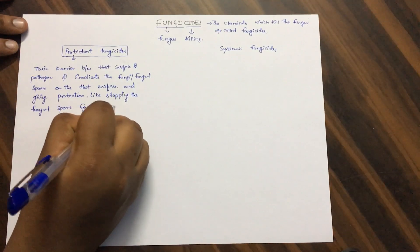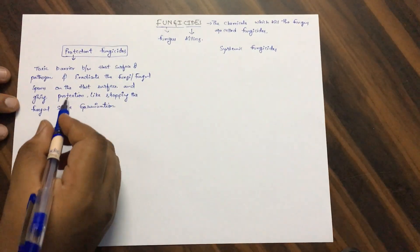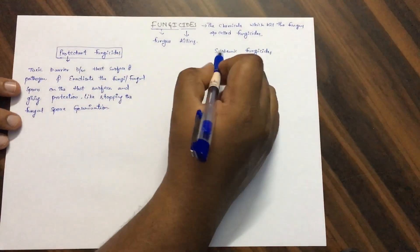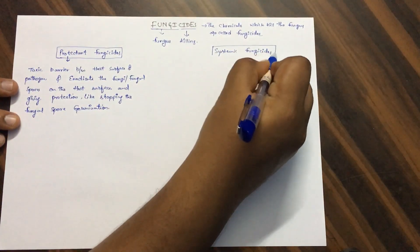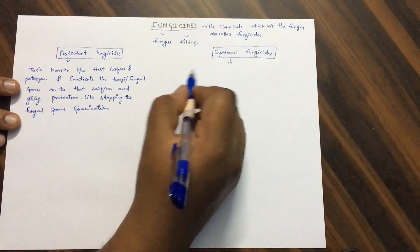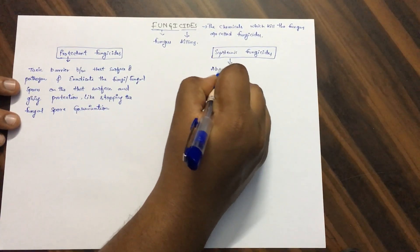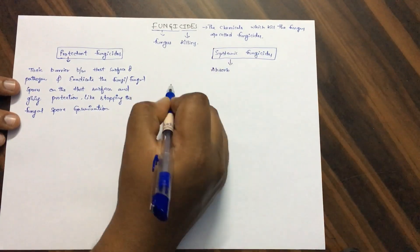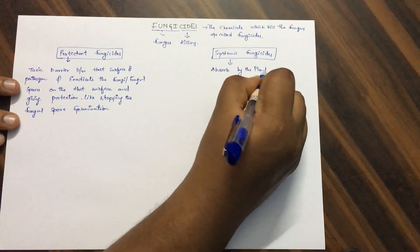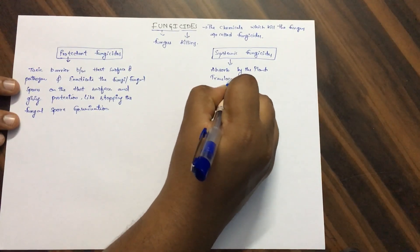This is the work of a protectant fungicide. And what is the function of the systemic fungicide? This systemic fungicide will absorb by the plant and it will translocate inside the plant.